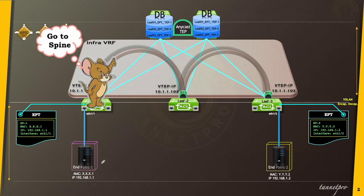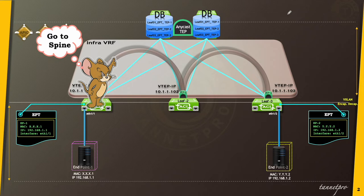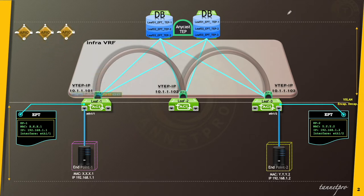Even though the leaf switch doesn't know the destination, it has one solution: go to the spine proxy. It uses the anycast TEP (tunnel endpoint) IP address, which might help since the spine proxy has all the information. The spine proxy uses the concept of 'no unknown' — it knows everything. So the leaf switch redirects the packet to the spine proxy, so it goes to the spine and the spine might help.